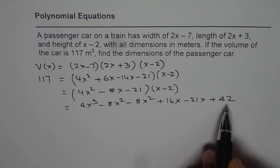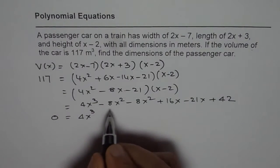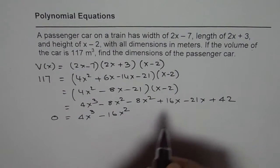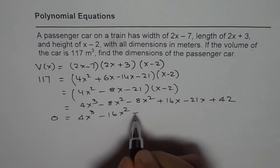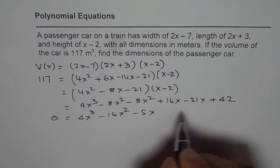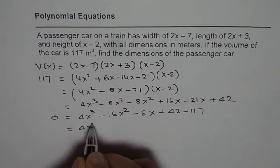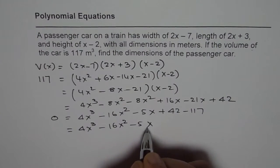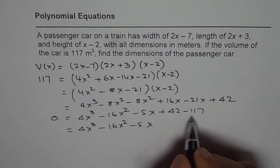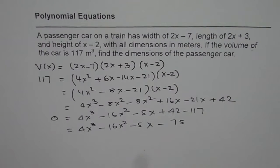Now we bring 117 to the right side and combine like terms. We get 0 equals 4x cubed. The x squared terms: minus 8x squared minus 8x squared gives minus 16x squared. The x terms: 16x minus 21x gives minus 5x. And the constants: 42 minus 117 gives minus 75. So the polynomial is 4x cubed minus 16x squared minus 5x minus 75.